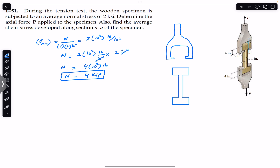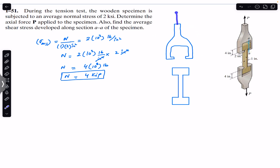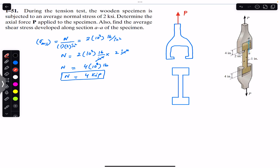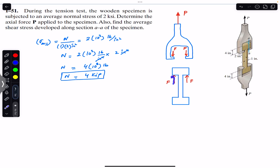Now to find force P, we consider the free body diagram of the upper part of the mechanism. Force P acts vertically upward. The two legs apply forces F on the specimen in the upward direction, and as a reaction the specimen applies force F downward on each leg. So we have two equal forces F acting upward on the specimen.